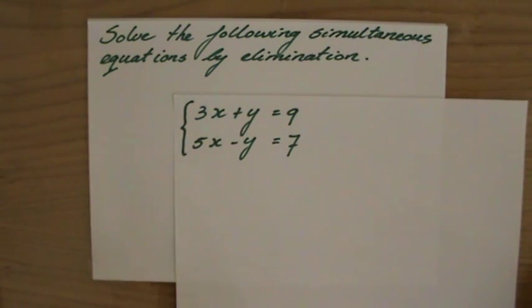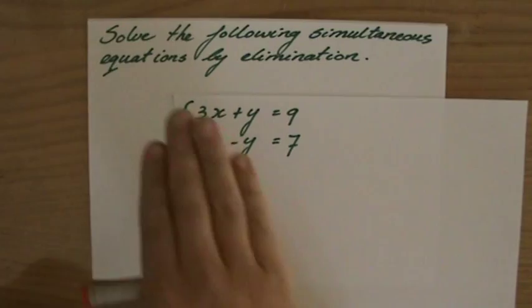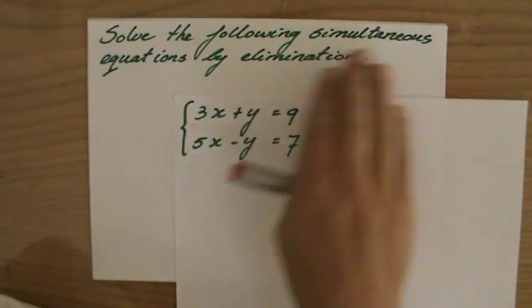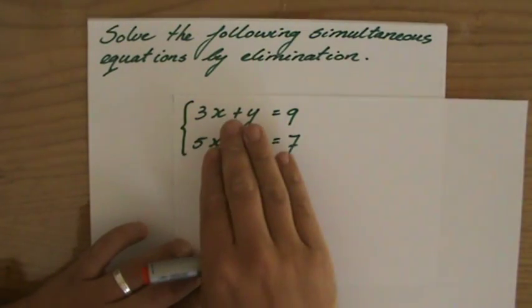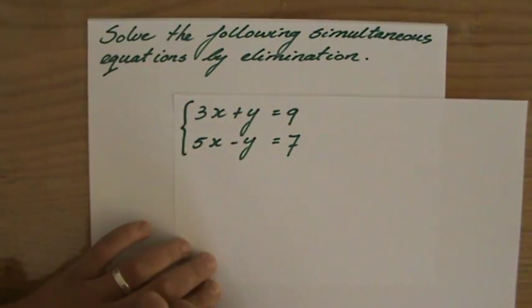Good morning and welcome back. They're asking me to solve the following simultaneous equations by elimination. Simultaneous equations means they give us two equations with two unknowns, x and y in this case.